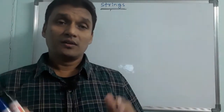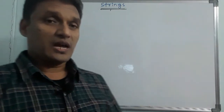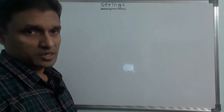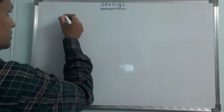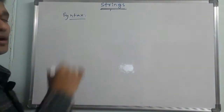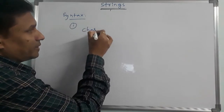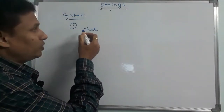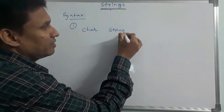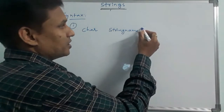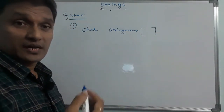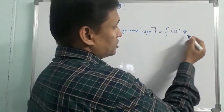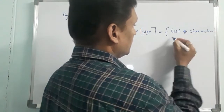We implement string using a one-dimensional character array. The syntax is: data type char, then the string name, then the dimension. So the first syntax is: char string_name[size], equal to a list of characters enclosed within single quotation marks.